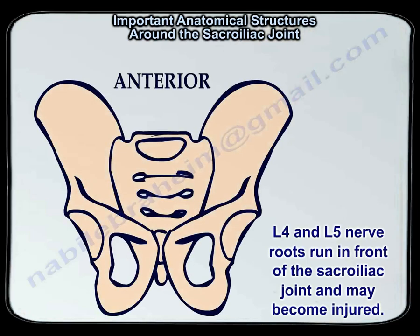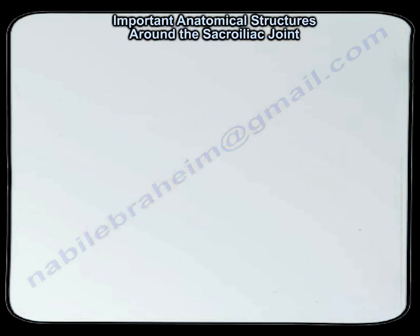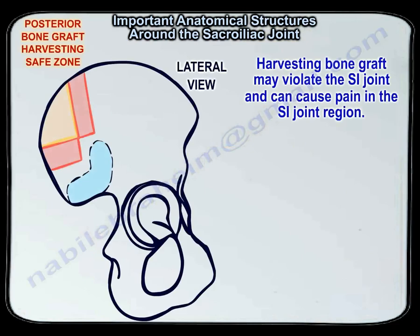L4 and L5 nerve roots run in front of the sacroiliac joint and may become injured from problems involving the sacroiliac joint. Harvesting bone graft may also violate the sacroiliac joint and can cause pain in the SI joint region.